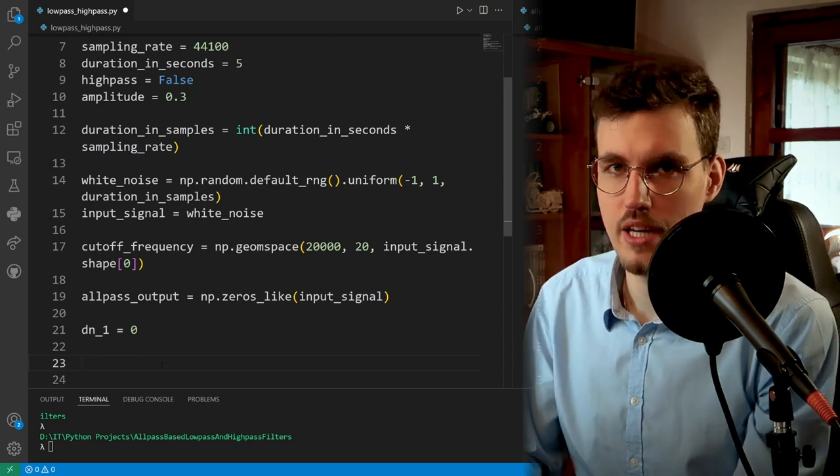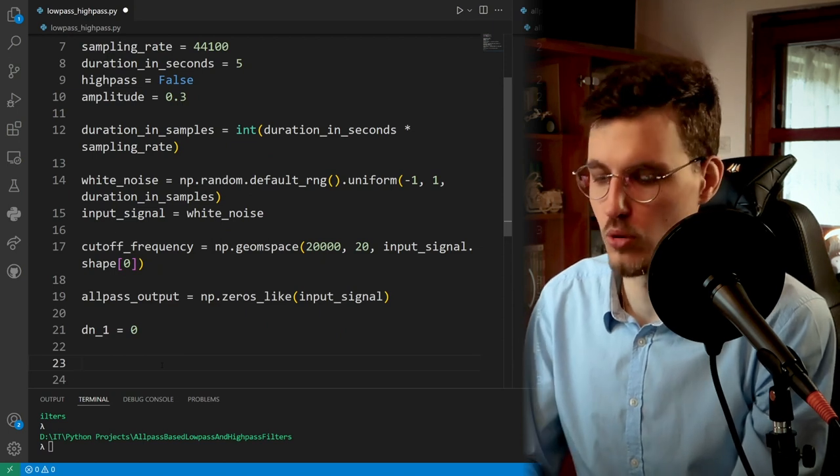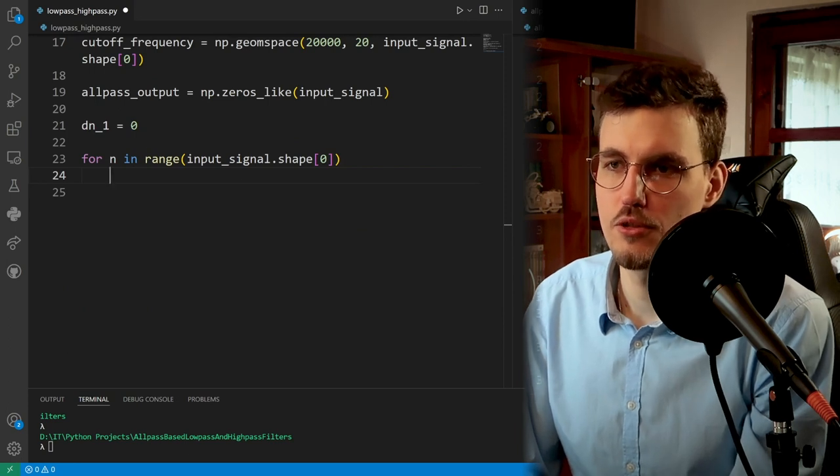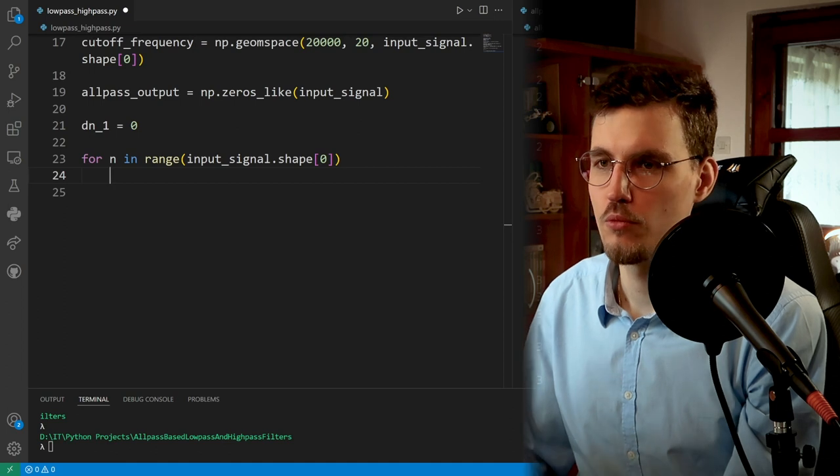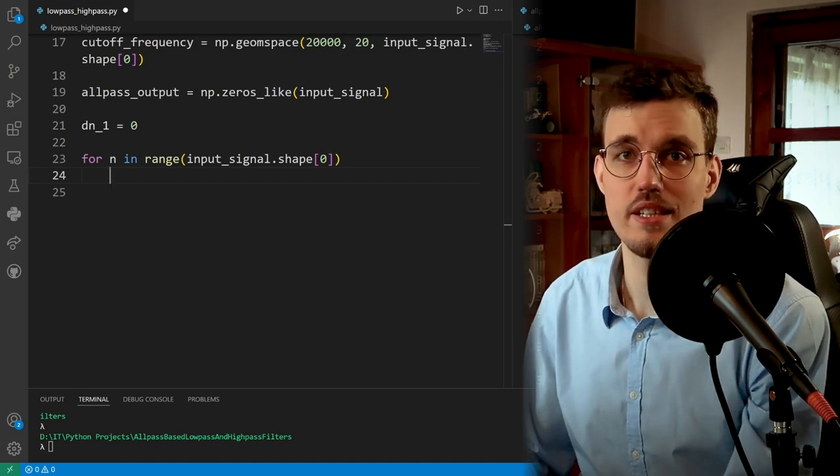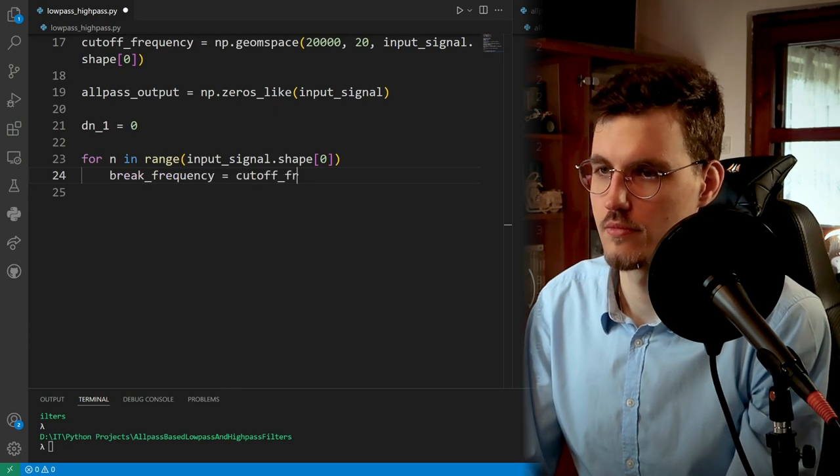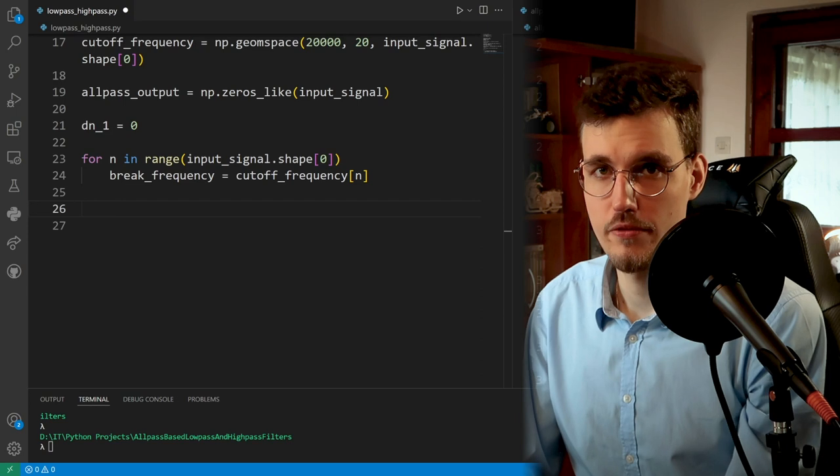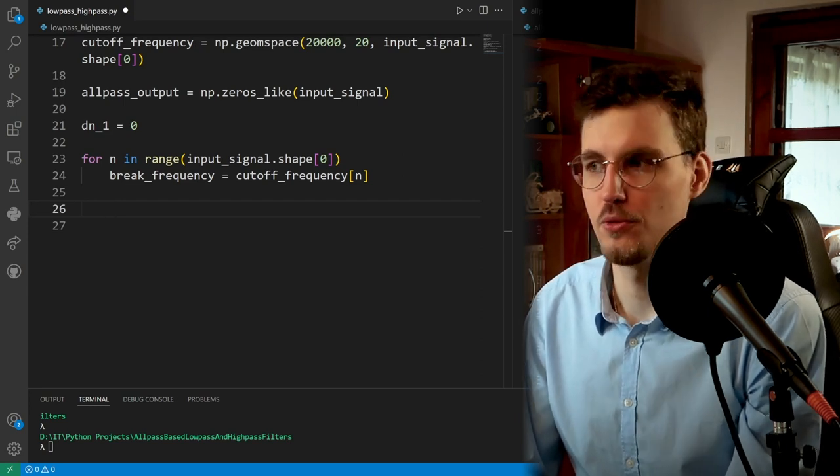If you're unsure about this implementation, be sure to check out the all-pass filter video. And now comes the actual sample-by-sample processing. So we'll write a for loop. We first need to get the break frequency of the all-pass filter, which in our case is, as we said, equal to the cut-off frequency of the filter. And now we can calculate the all-pass coefficient, the A1 coefficient. I will use a helper variable to do this.